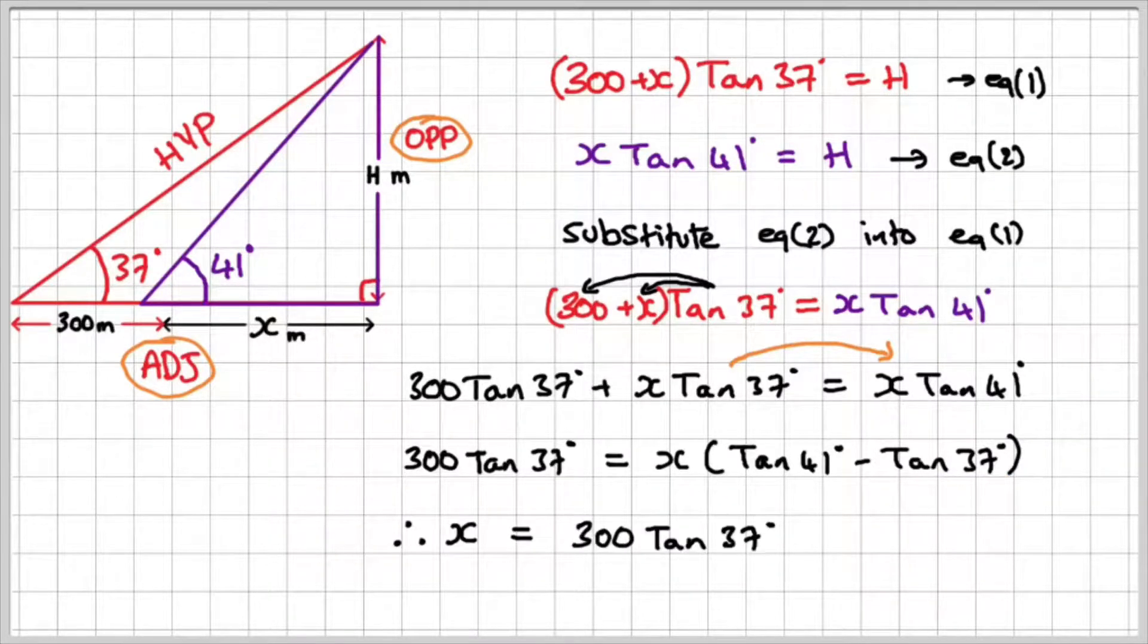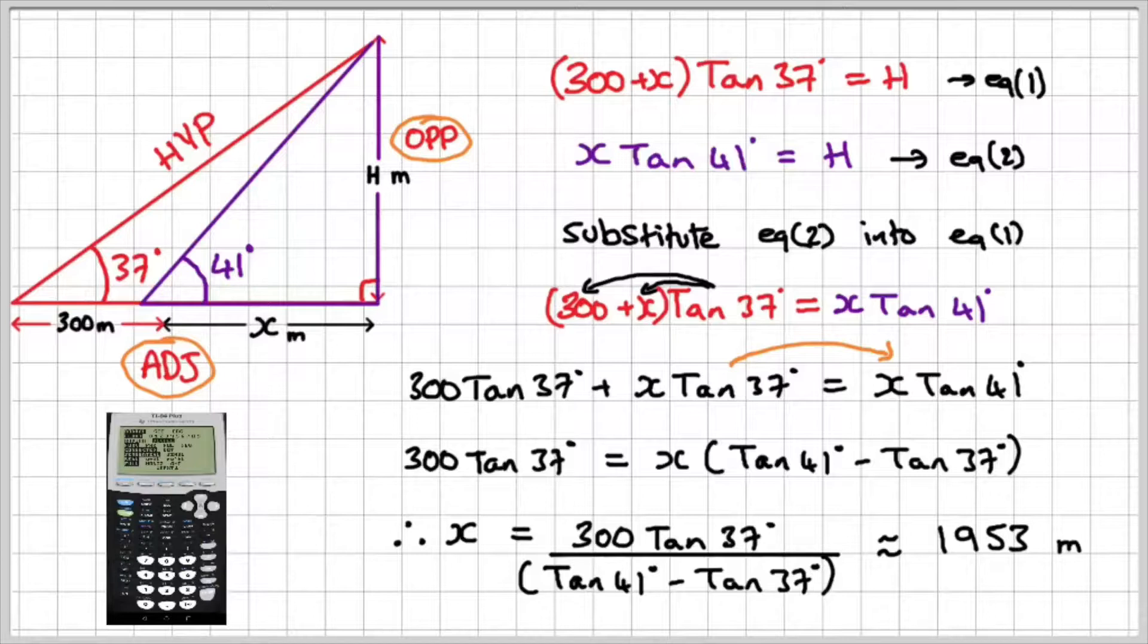Final step, I can rearrange this by saying, therefore, x is equal to 300 times tan 37 all divided by tan 41 minus tan 37. And if I do that on my calculator, I will get x is equal to approximately 1,953 meters.